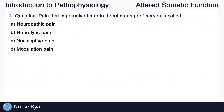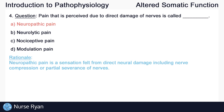Question number four: pain that is perceived due to direct damage of nerves is called what? The answer here is A, neuropathic pain. Neuropathic pain is a sensation felt from direct neural damage, including nerve compression or partial severance of nerves.